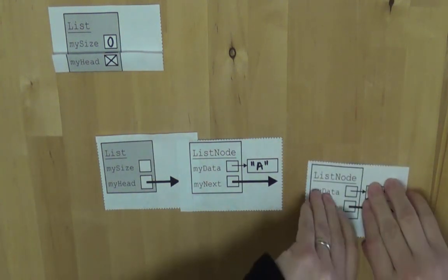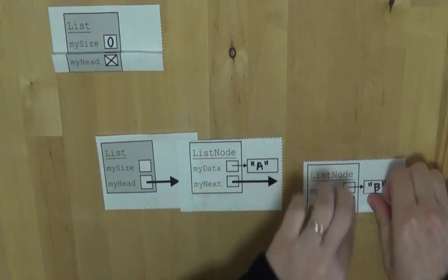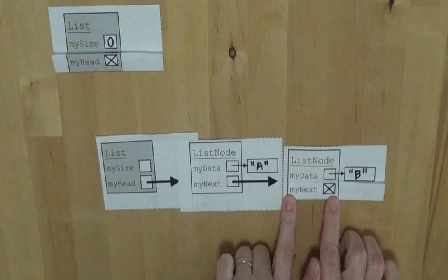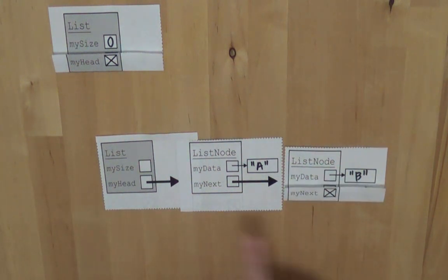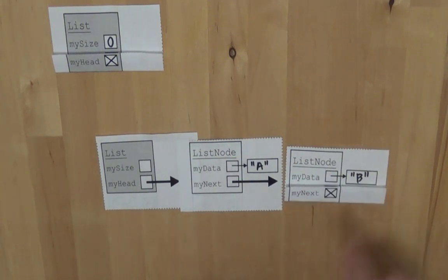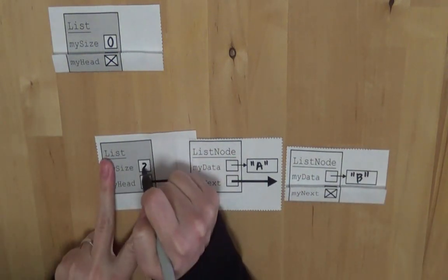And then my next here doesn't have anything else to reference, so I can fold up the bottom so that my next is shown as null. And then for this list that I've got right here that has two list nodes in it, my size for that one would be two.